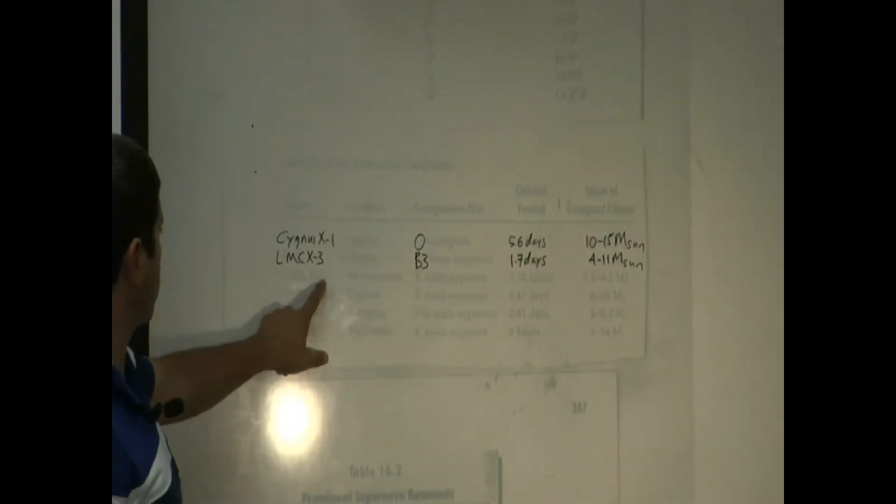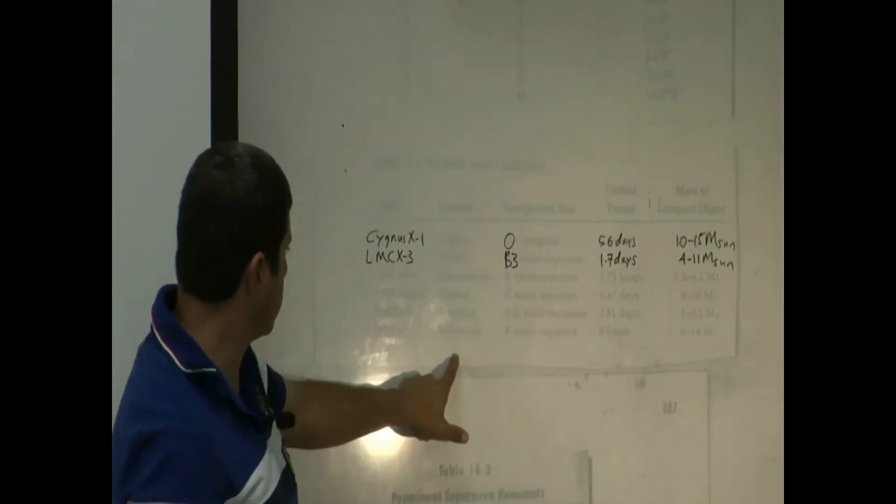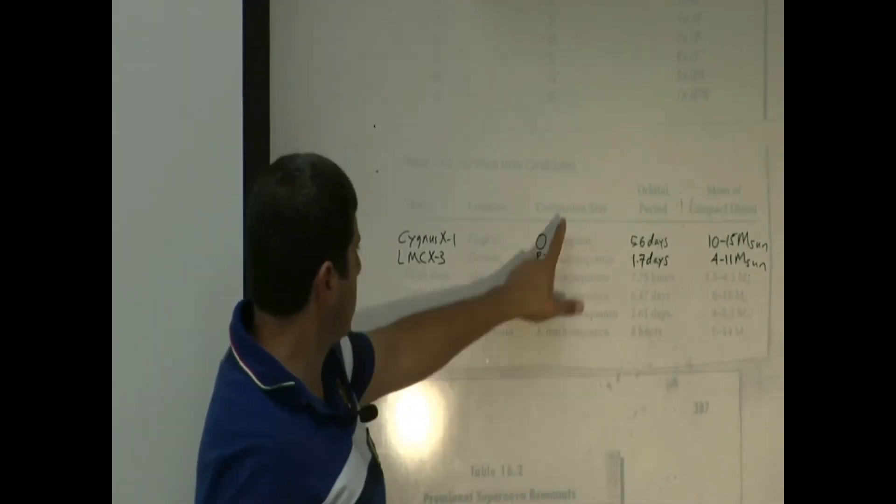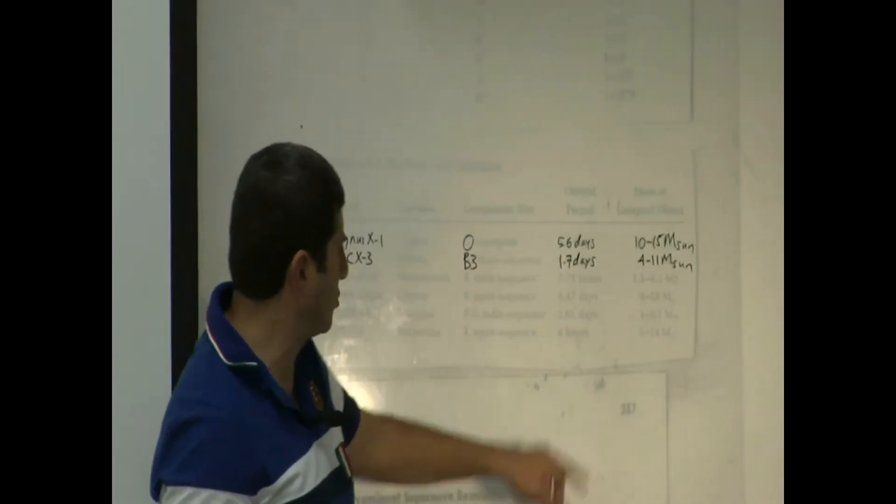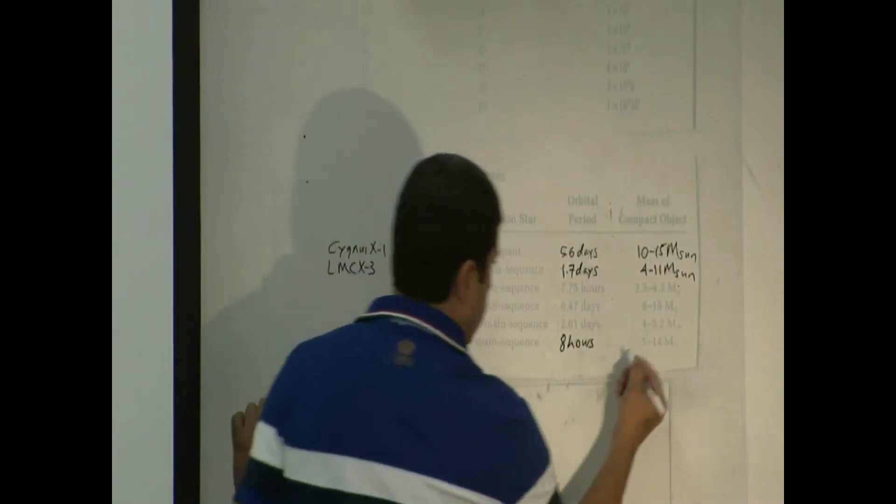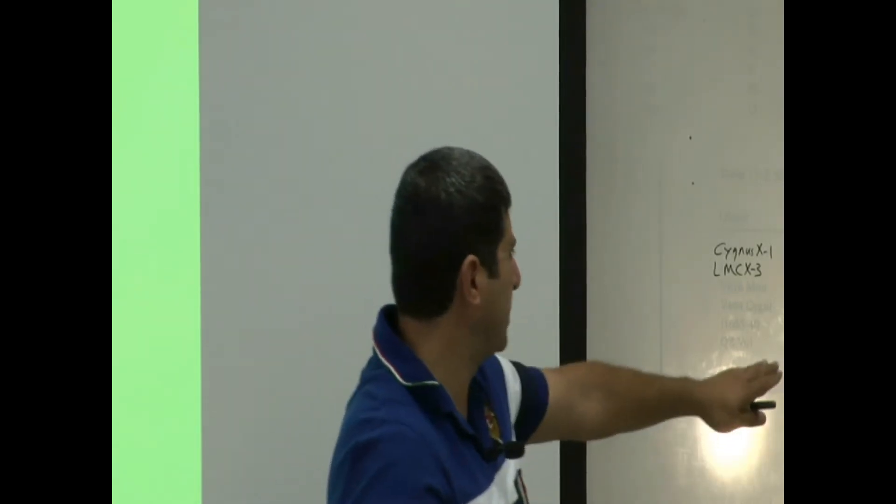And then another one is V616 MON, V404 Cygni, J1655-40, QZ Vol. These are the locations. When they say location, they mean the constellation. Which constellation is it in? And then the companion star and how many days it's taking to go around. This one is interesting. It takes 8 hours for it to go around. And the black hole is 5 to 14 solar masses. By the way, these are all what are known as ordinary black holes. In the next lecture, we're going to see that there is another kind of black hole known as supergiant black hole. They're at the centers of galaxies. They eat up all the stars that are in their vicinity. These are very light black holes, ordinary.